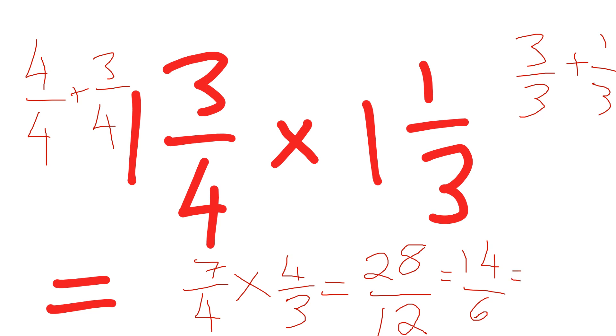Okay, and then writing this as a mixed number or a mixed fraction, how many times does three go into seven? It goes in twice because two times three is six and the remainder is one, so my final answer will be two and one third as a mixed number.